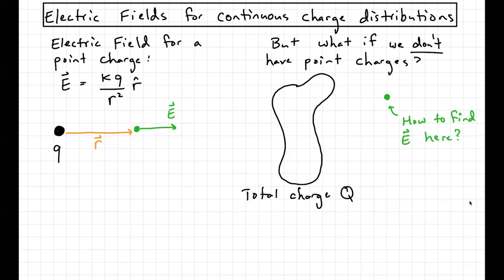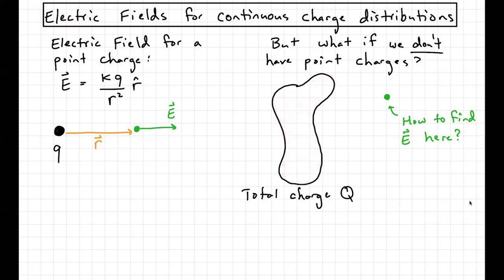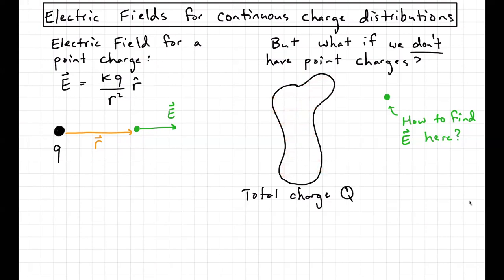That's kind of the problem. When we say continuous charge distribution, we mean this object is just some continuous distribution of charge — in the same way that in a moment of inertia problem, we find the moment of inertia for a continuous mass distribution. There's some mass density, and we use that with the definition of moment of inertia to calculate it. Here, there's going to be some charge density throughout this thing, and we're going to use that to figure out what the electric field is.